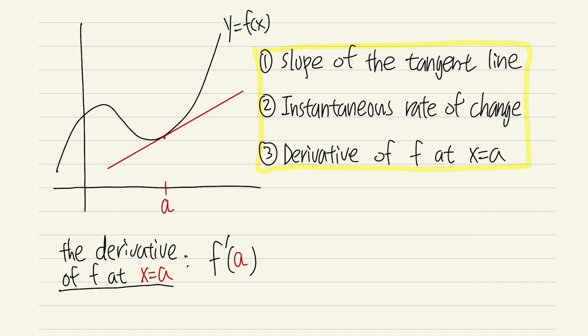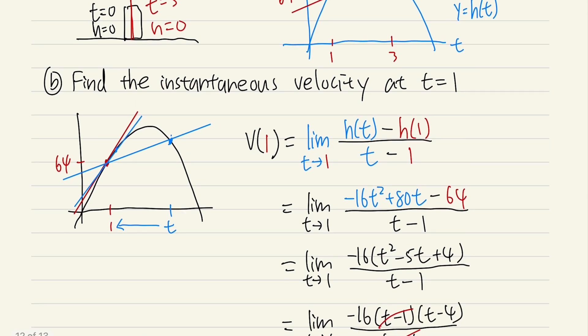Just like last time, when we want to find the slope of the tangent line we need another point, so we pick one and call it some other value, then approach it. As that value approaches one, you can see the blue line will look more and more like the tangent line. We do the same thing here as well.